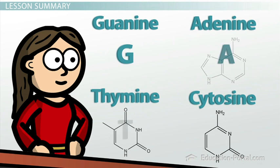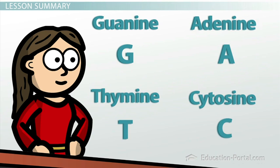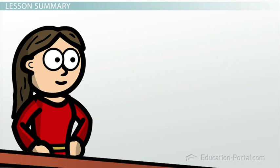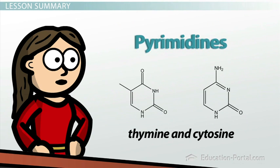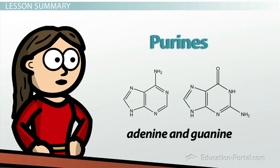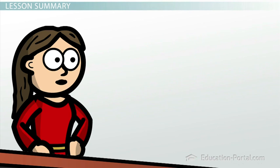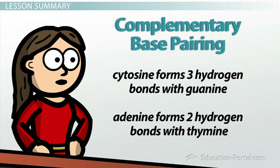The bases can be divided into two categories. Thymine and cytosine are called pyrimidines. Adenine and guanine are called purines. Each nucleotide base can hydrogen bond with a specific partner base in a process known as complementary base pairing.